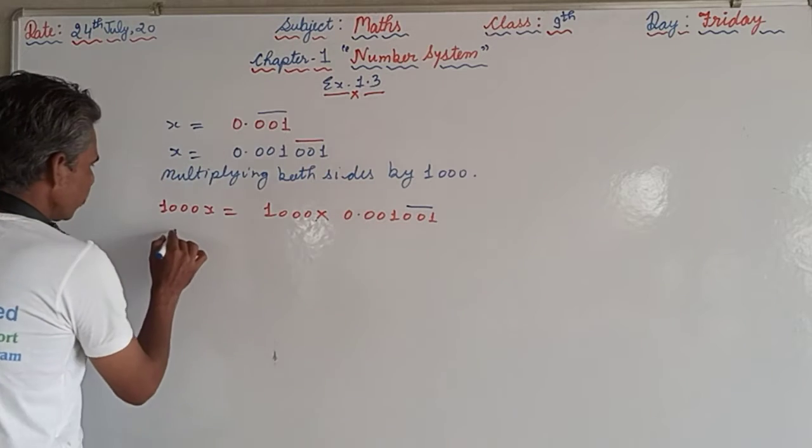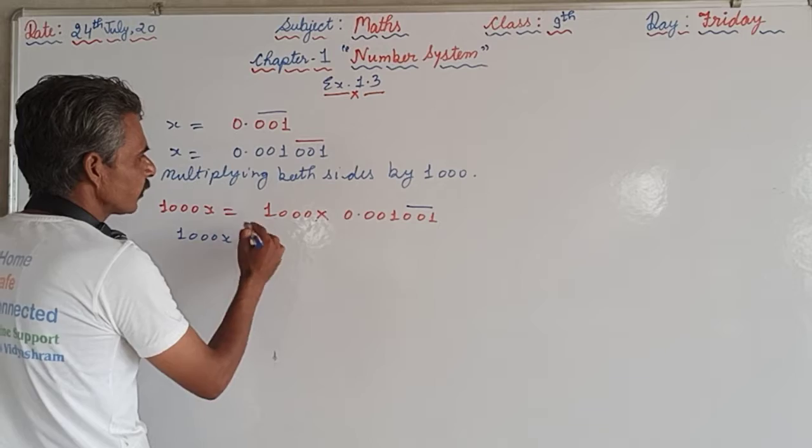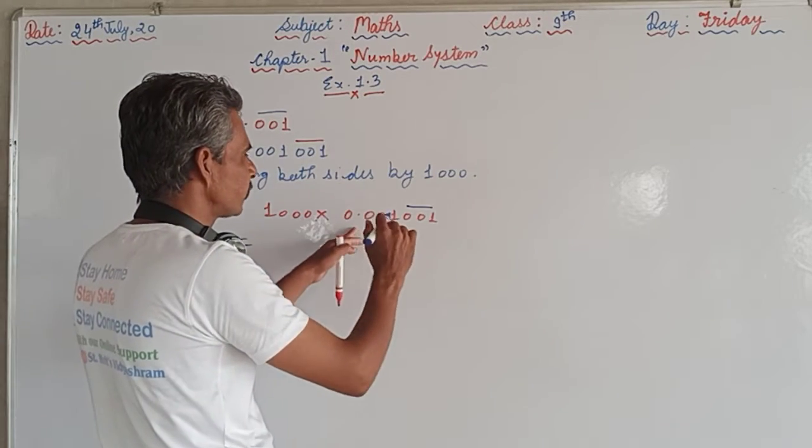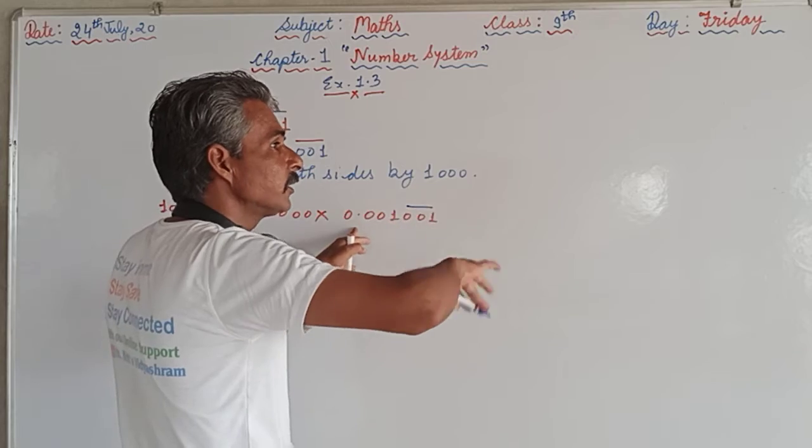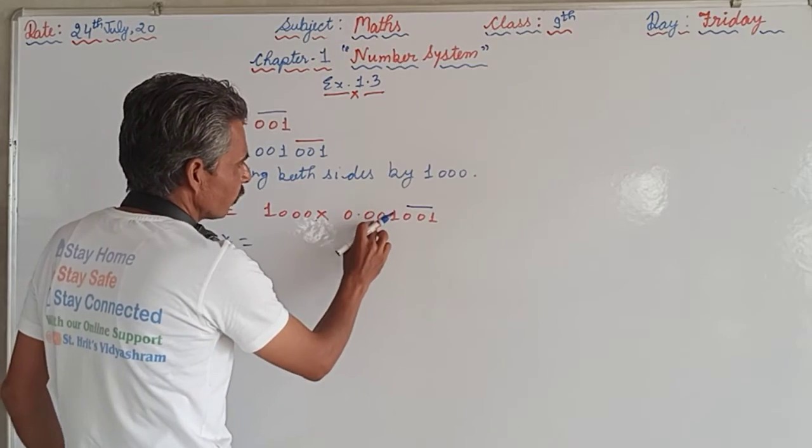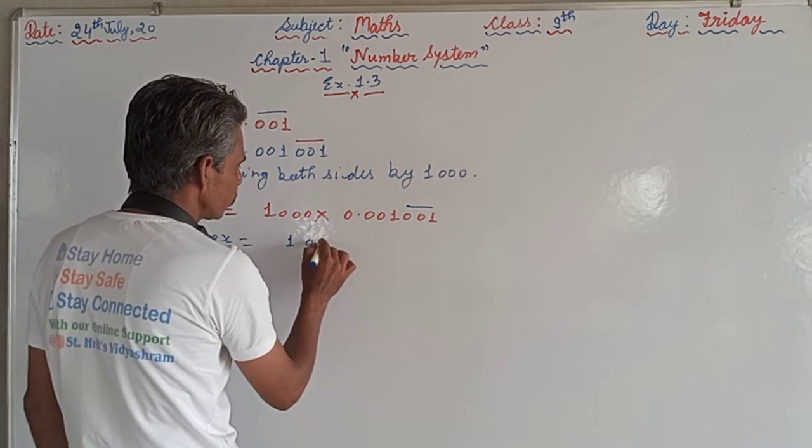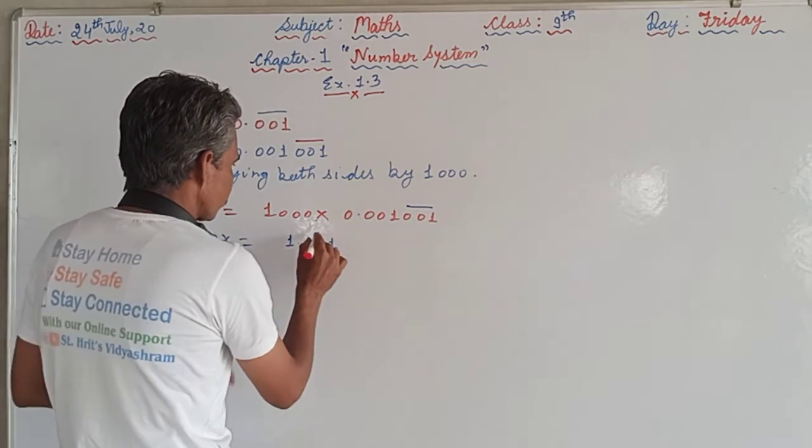So from here we will get 1000x, and here we will get 1000 multiplied by 0.001001 bar. So here it comes 1000x, and from here if you multiply by 1000, how many zeros are there? Three. So the decimal shifts by three digits on the right hand side. From here it will come 1.001 bar.